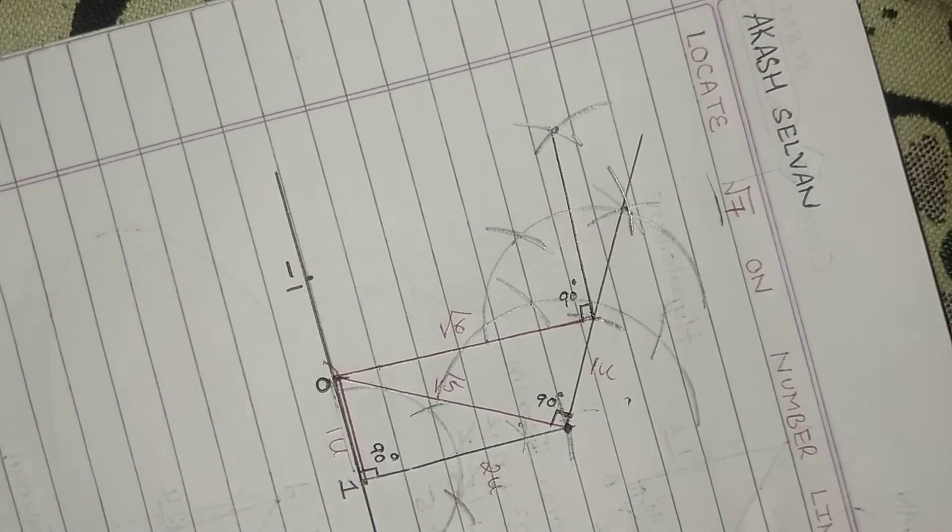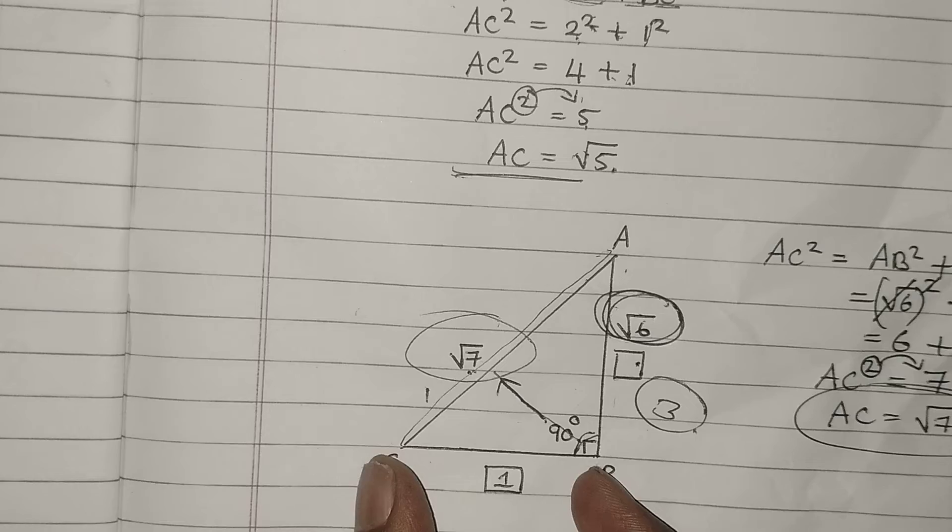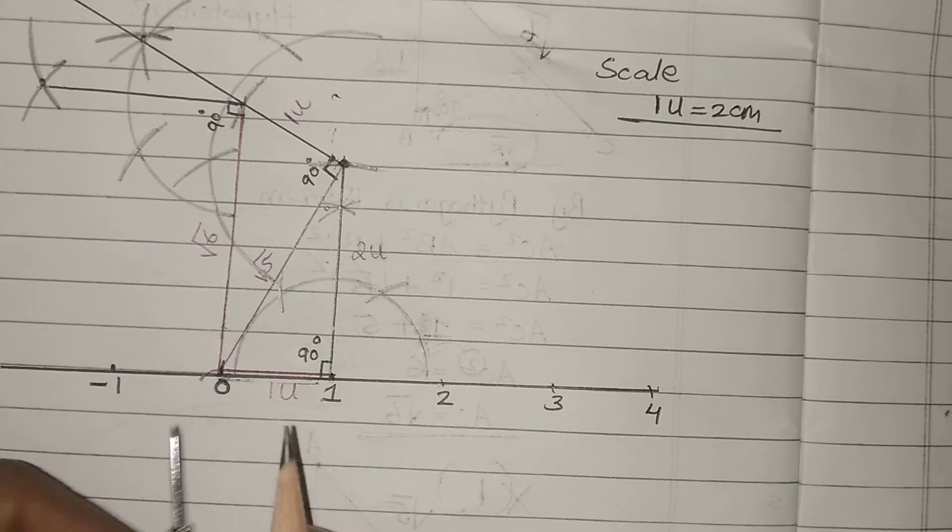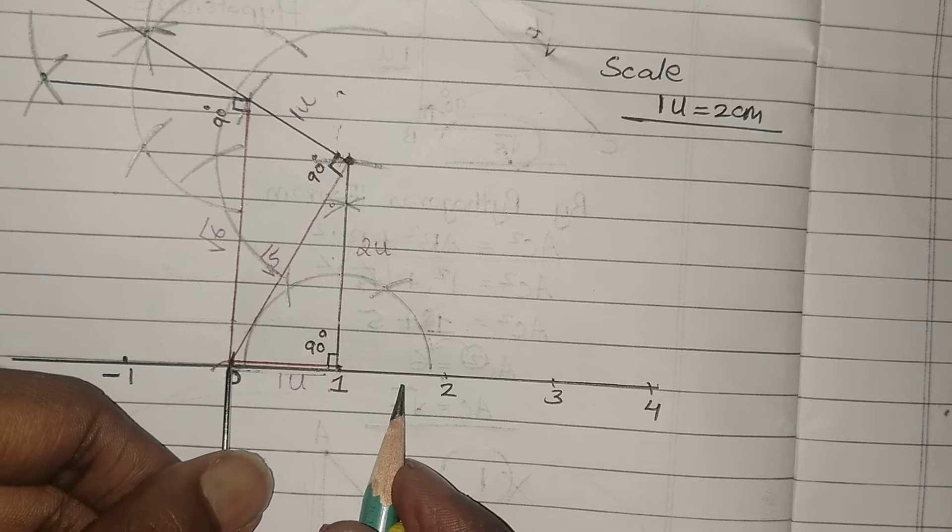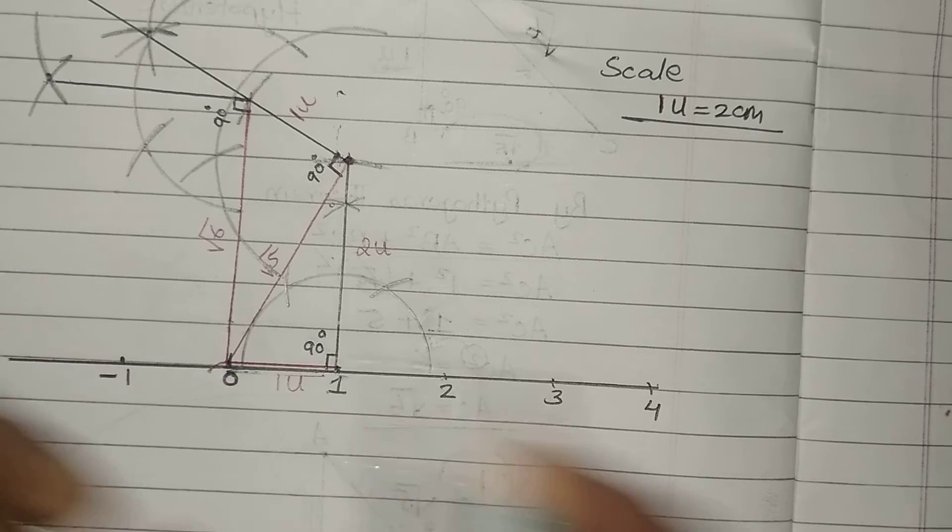So this is my 90 degrees. From this 90 degree line, I have to take how much? Already I have root 6. From this 90 degree line, we have to take 1 unit. So for 1 unit, you have to take a compass. Because 1 unit means not 1 centimeter, it is 2 centimeters. This is my 1 unit.